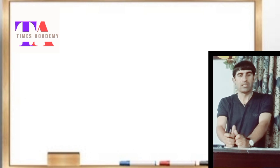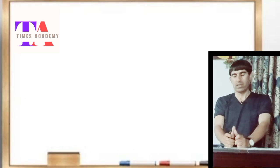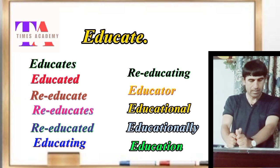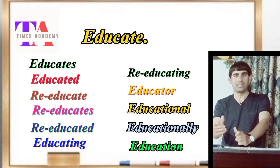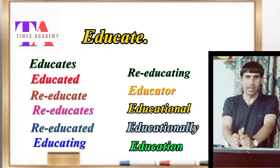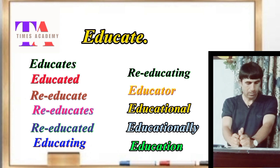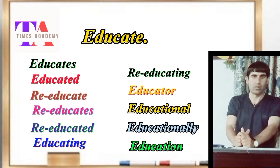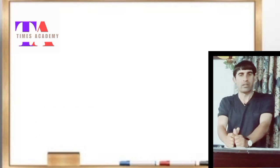In this lecture I will take a specific word — 'educate' — and give its different forms. These forms are: educate, educated, re-educate, re-educated, educator, educational, educationally, and education. The different forms of a root word are actually called morphemes, and such study is done in the specific branch of grammar called morphology.